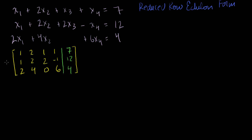If we call this augmented matrix matrix A, then I want to get it into the reduced row echelon form of matrix A. The convention for matrices, just like vectors, is to make them bold, but you use capital letters instead of lowercase letters. We'll talk more about how matrices relate to vectors in the future, but let's just solve this system of equations.